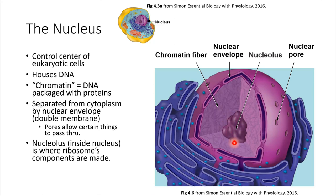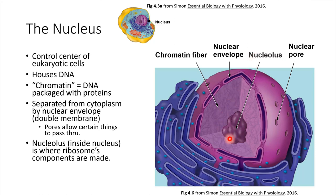Be a little careful with these names, because some of them start to sound really similar. The whole structure is called the nucleus, and then the special structure inside is called the nucleolus. The nucleolus is the site where ribosomes are made — we're going to meet a ribosome in just a moment.